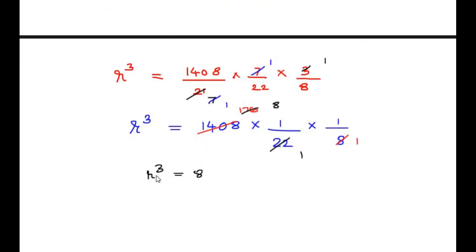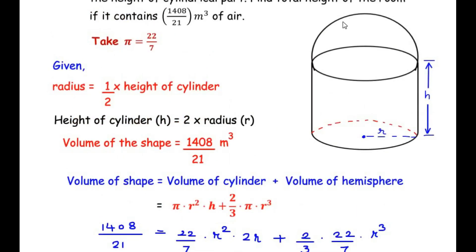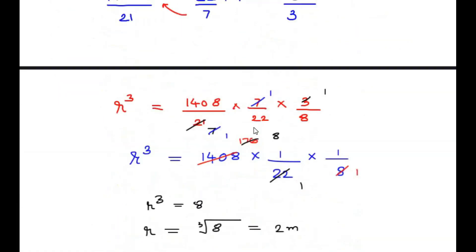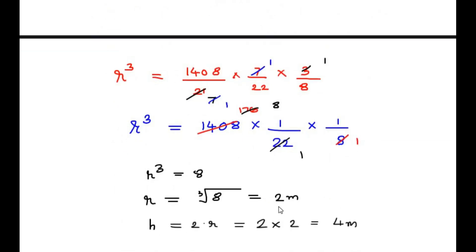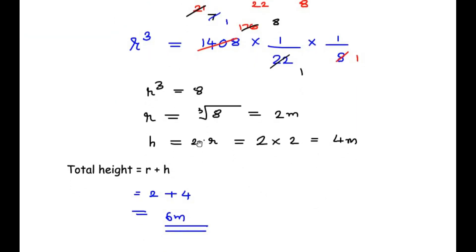Taking the cube root of both sides, r = ∛8 = 2 meters. So the base radius is 2 meters. Using the relationship h = 2r, the height of the cylinder is 2 × 2 = 4 meters. The total height of the room is r + h = 2 + 4 = 6 meters.